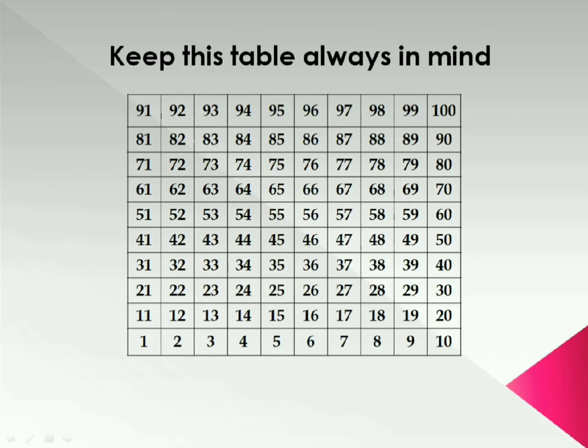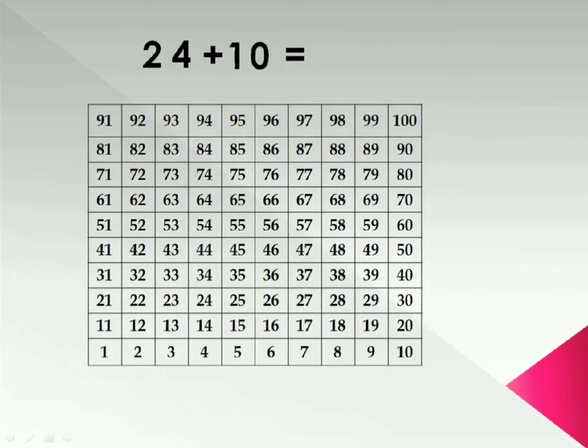Let's start with our first example. That is 24 plus 10. So the first step is highlight 24 in the table. Adding 10 means adding 1 tens. So jump one step up. That is 34. Hence answer is 34.